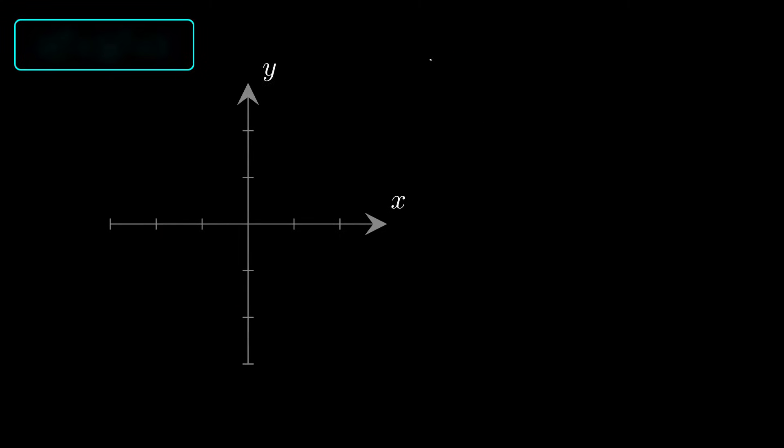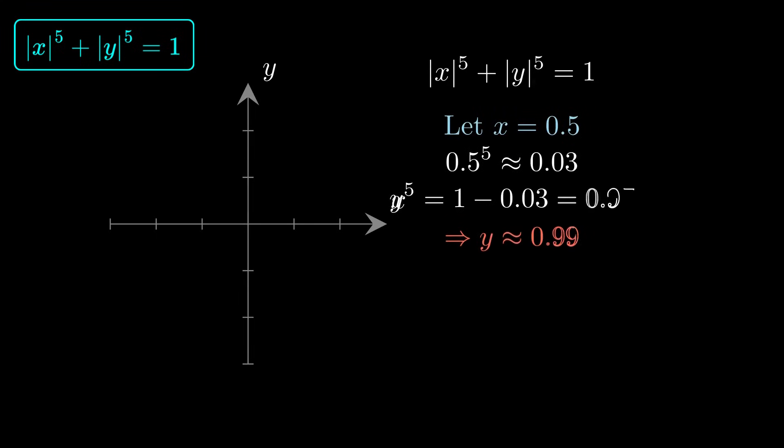Here, the exponent is 5. The equation becomes absolute x to the power 5 plus absolute y to the power 5 equals 1. To see what this does, try x equals 0.5. 0.5 to the power 5 is approximately 0.03. That leaves y to the power 5 equal to 0.97, so y is roughly 0.99. This pushes the curve outward and makes the corner nearly flat.